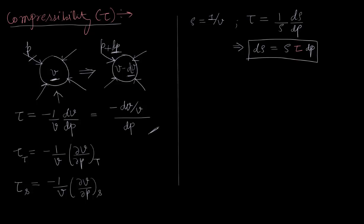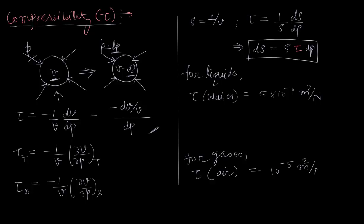Now let us compare the values of compressibility for liquids and gases. For liquid, for example, tau of water is 5 into 10 to the power minus 10 meter squared per Newton. And for gases, for example, tau of air is 10 to the power minus 5 meter squared per Newton.